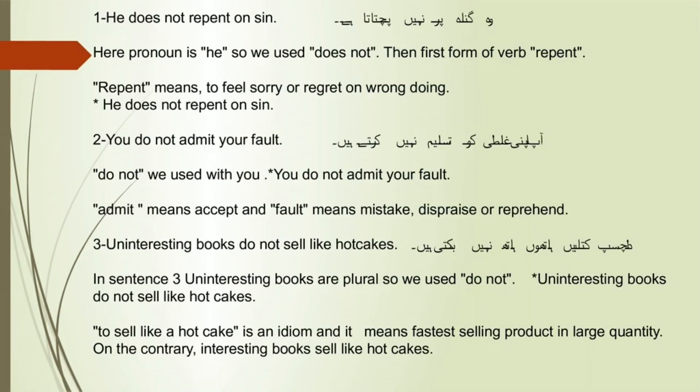Sentence number 1: He does not repent on sin. Here the pronoun is 'he,' so we used 'does not,' then the first form of verb: repent. Repent means to feel sorry or regret on wrongdoing. He does not repent on sin.